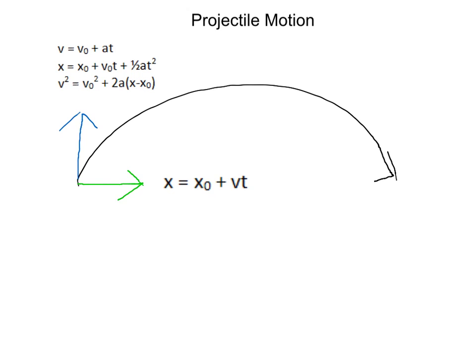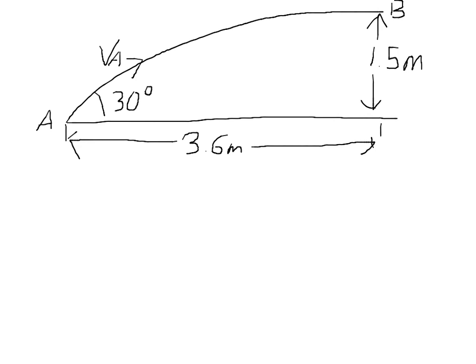Now we're going to go on to an example. We have a particle going from a to b at an initial velocity of v sub a at 30 degrees. From a to b is 3.6 meters in the x direction and 1.5 meters in the y direction. Let's split this up into an x component and a y component.